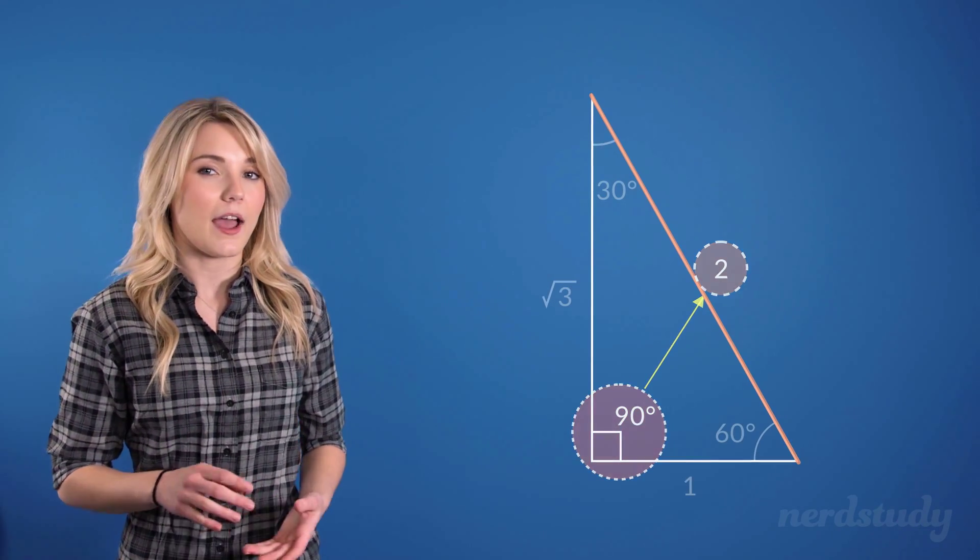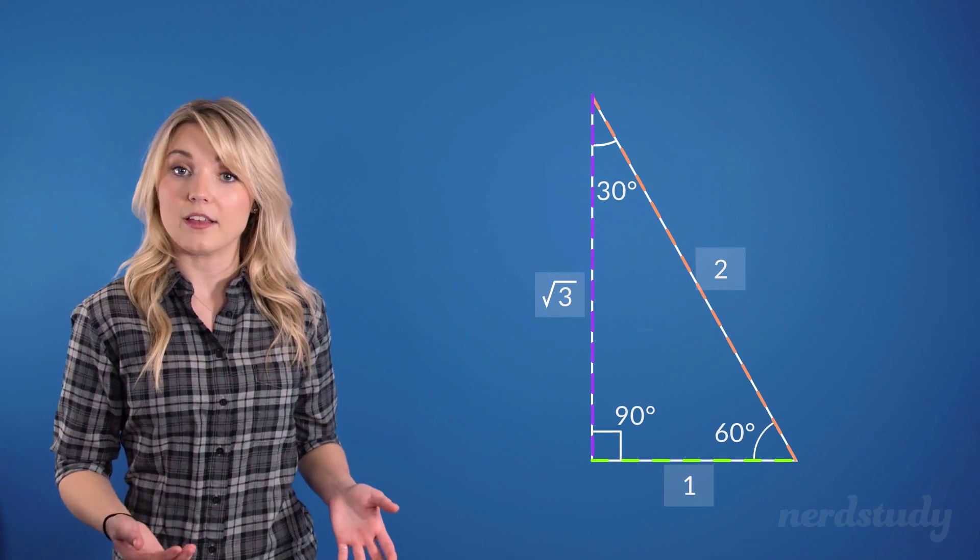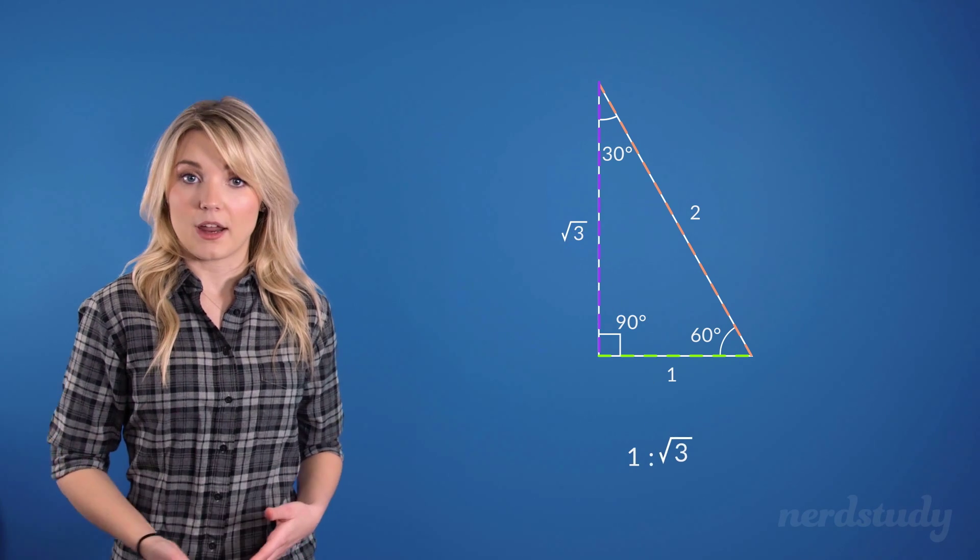It's worth keeping in mind, however, that the 30-60-90 triangle side lengths that we memorize are just ratios. So that's 1 to square root of 3 to 2.